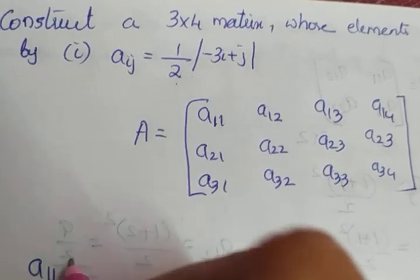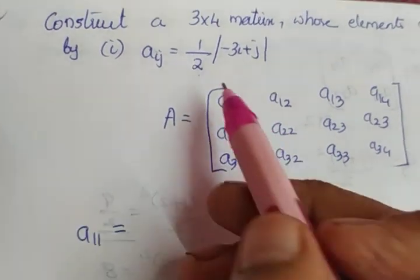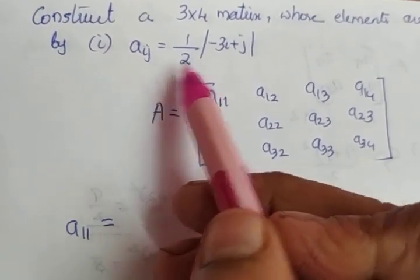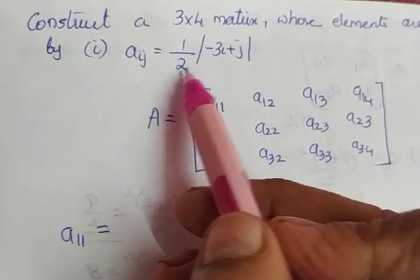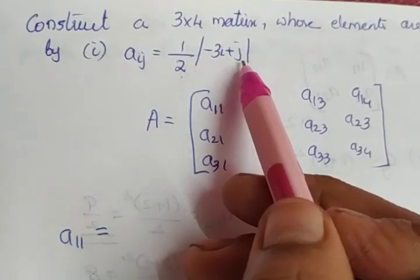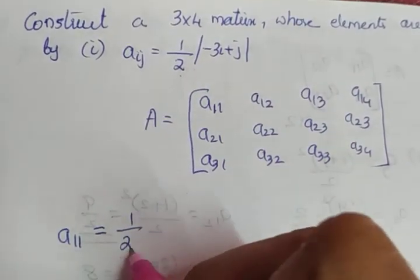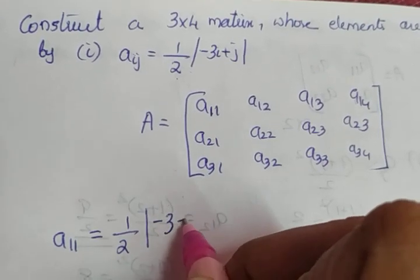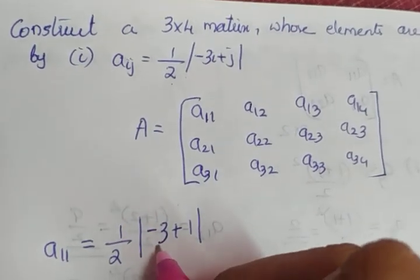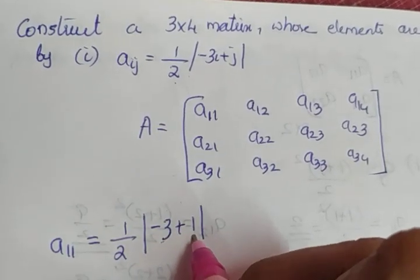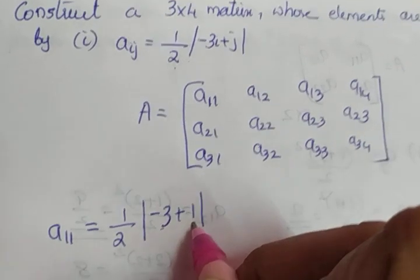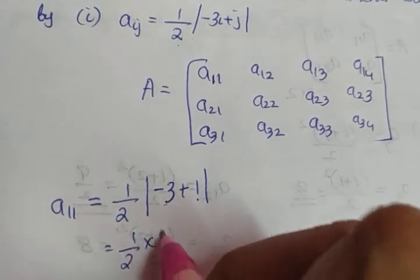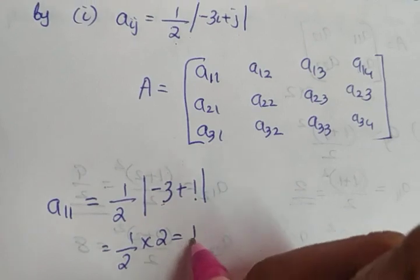Start with A11. The given condition is Aij equal to half into modulus of minus 3i plus j. So, half into modulus of minus 3 into 1 plus 1. Minus 3 plus 1 is minus 2; modulus of minus 2 is 2, the negative will go. So half into 2 gives you the value 1.